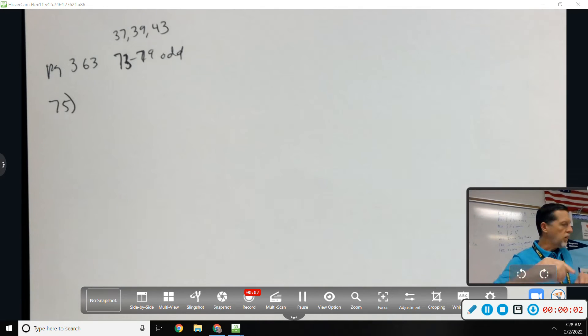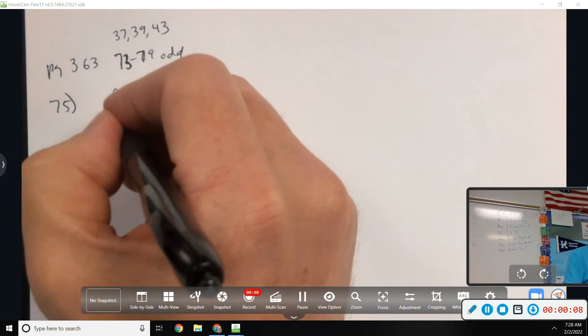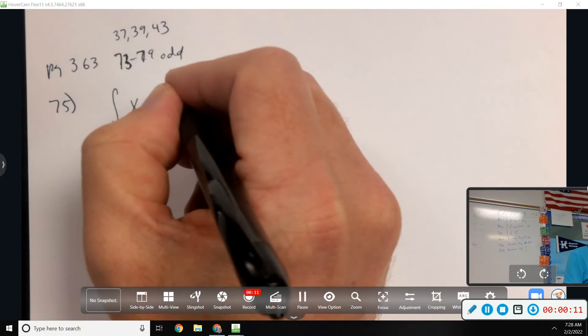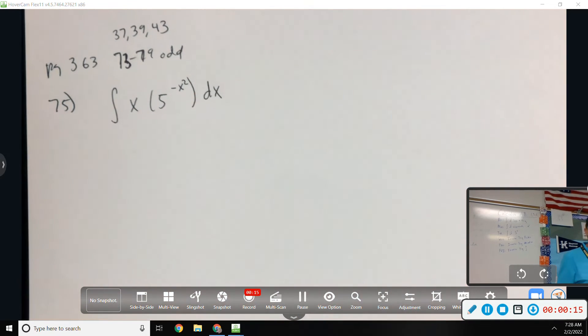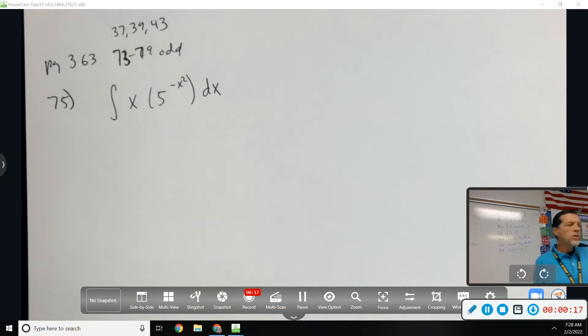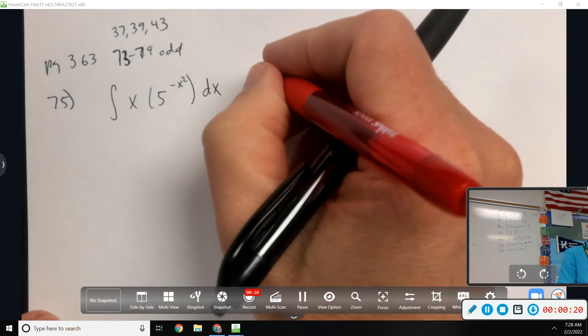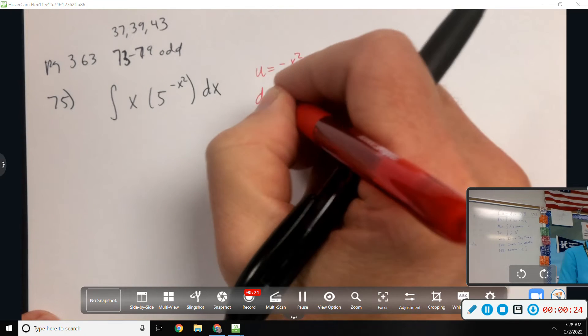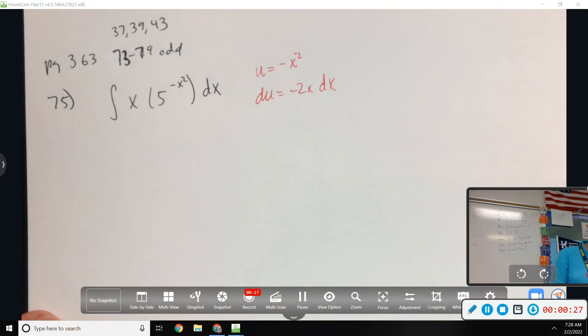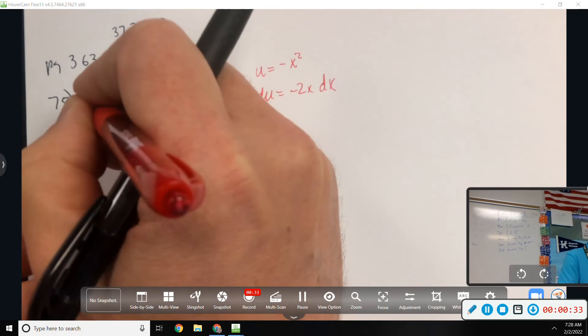Looking at page 363, number 75: integral of x times 5 to the negative x squared dx. Almost always when we have exponents, we want u to be the exponent, and hopefully du shows up. And it does here, or at least close to shows up anyway. Just put a negative 2 on that, and then a negative 1 half out front.